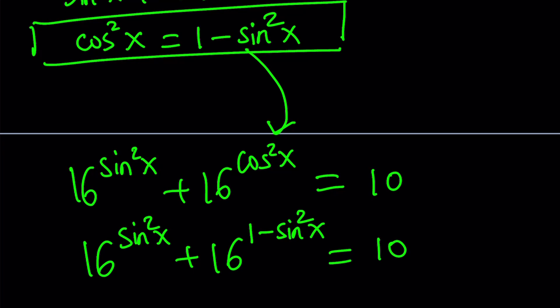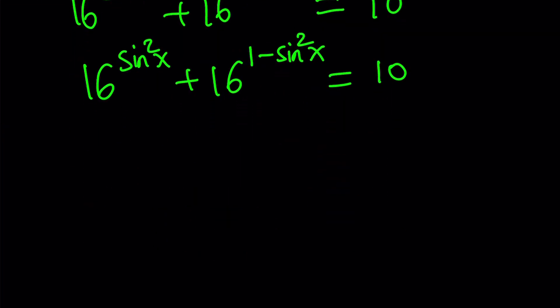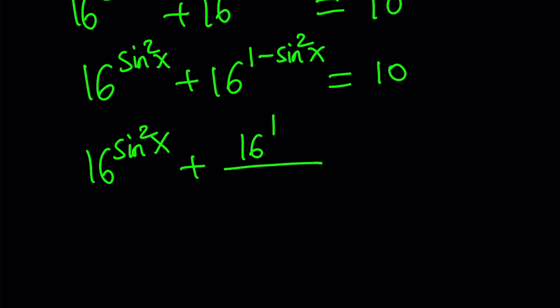And then I can split this into two numbers like a quotient. Because when we divide powers with the same base, we subtract the exponents. So let's write it this way: 16 to the power 1 divided by 16 to the power sine squared x equals 10. And 16 to the power 1 is 16, of course.